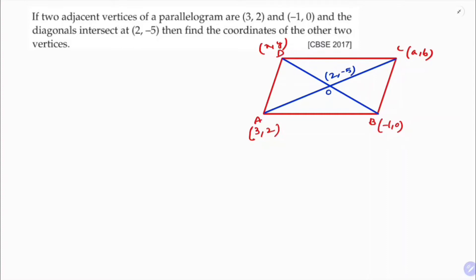We know the property of parallelogram that midpoint of AC is equal to midpoint of BD. Diagonals bisect each other, so midpoint of AC is given: midpoint of A(3,2) and C(a,b) is (2,-5).